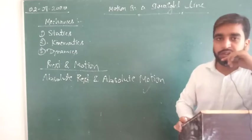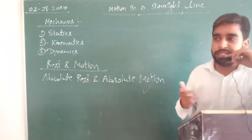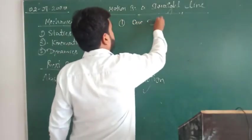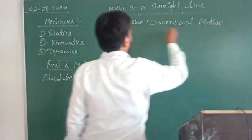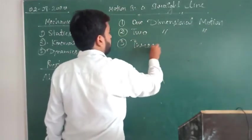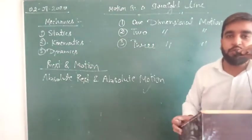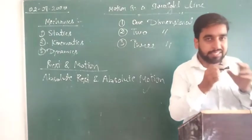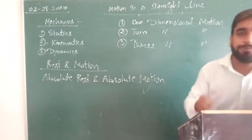Now we are going to discuss various kinds of motion: motion in one dimension, two dimension, and three dimension. In one-dimensional motion, only one axis is enough to describe the motion of the body. Suppose one body is moving in a straight line — it doesn't matter which direction — only one axis is required to define the position of the object at any instant of time.